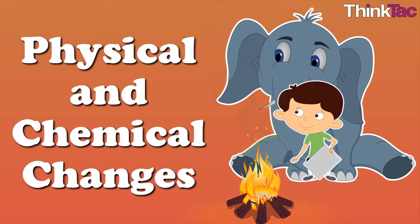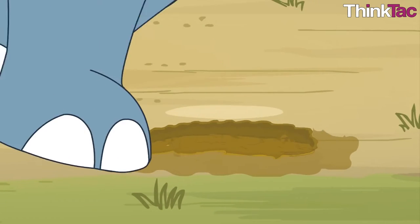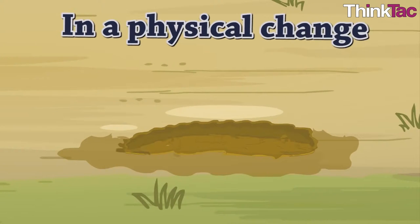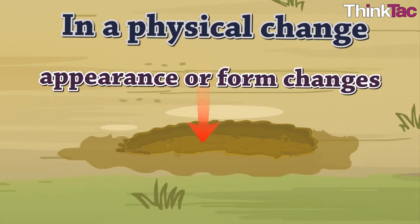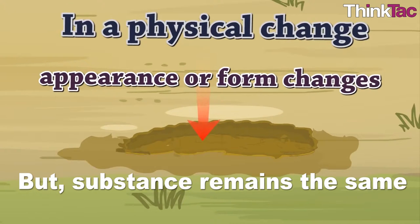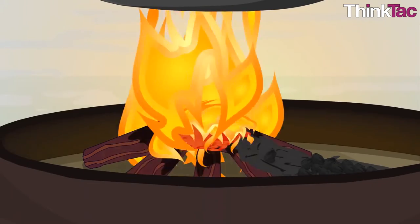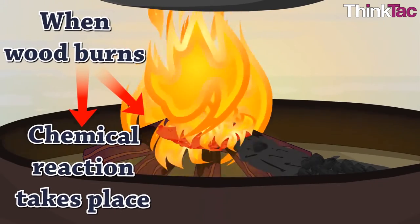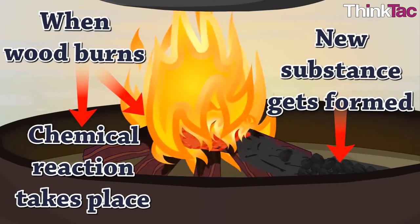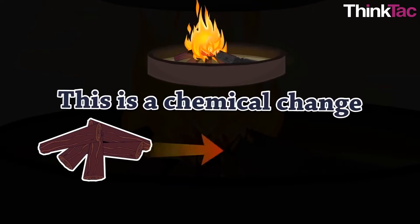There are two types of changes: chemical change and physical change. Physical changes can be defined as changes affecting the form of a substance but not its chemical composition. This is in contrast with the concept of chemical change, in which the composition of a substance changes or one or more substances combine or break up to form new substances.